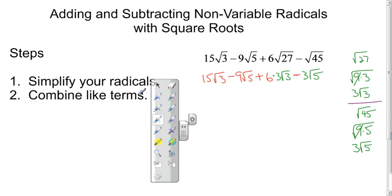And then I'll do a little step 1a here, which is to continue to simplify and rewrite this line one more time. So I'm going to get 15 root 3 minus 9 root 5 plus 18 root 3 minus 3 root 5.